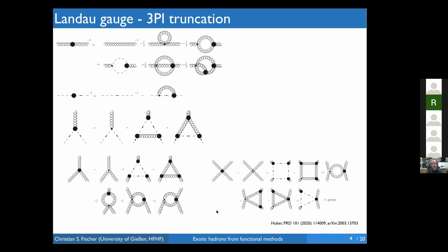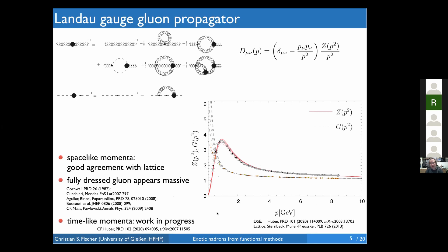With this recipe for closing, we can actually do a parameter-free calculation — the whole system of equations is self-contained. What you get is shown here: the gluon dressing function and the ghost dressing function as a function of Euclidean momentum (space-like), compared with lattice calculations. The results in red nicely agree with the corresponding lattice data. There is some uncertainty associated with Gribov copies, represented by this spread, but apart from that this is essentially a one-parameter family of solutions in the infrared.